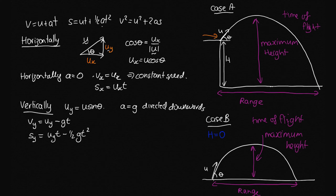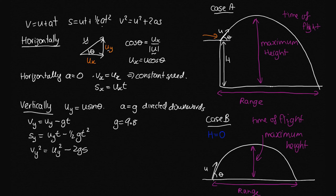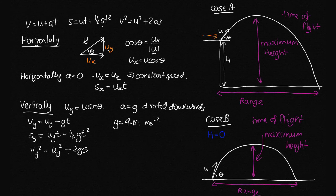When substituting in, I use G equal to 9.80 or 9.81 — the average over the Earth — and I'm not using a negative value for G because I've already got my negative sign in the equation. I've now written out the kinematic equations horizontally and vertically, and I can use these to come up with expressions for time of flight, range, and maximum height.